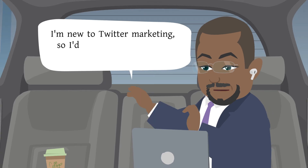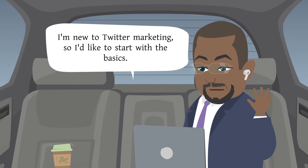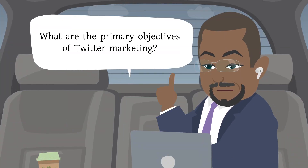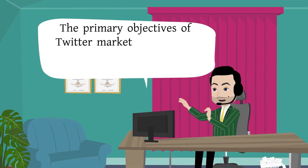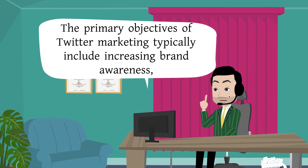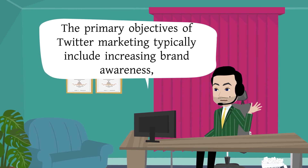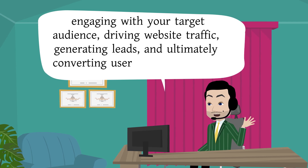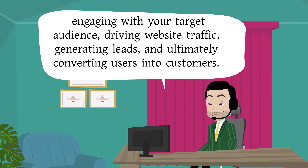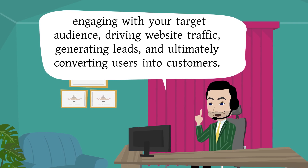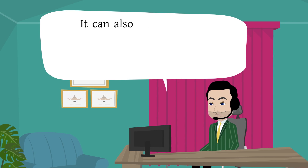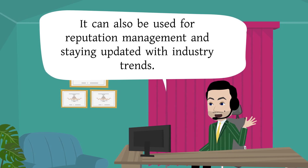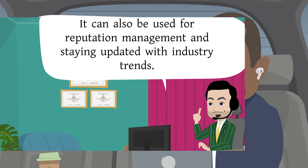I'm new to Twitter marketing, so I'd like to start with the basics. What are the primary objectives of Twitter marketing? The primary objectives typically include increasing brand awareness, engaging with your target audience, driving website traffic, generating leads, and ultimately converting users into customers. It can also be used for reputation management and staying updated with industry trends.